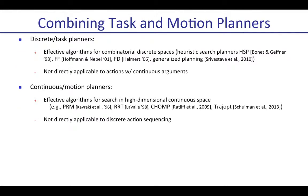Task planners and motion planners have distinct complementary strengths. Task planners are very good at finding solutions in combinatorial search spaces, mostly by using innovative techniques for finding heuristics automatically given a domain specification. But they're not so great at finding paths in continuous high-dimensional search spaces, which is what motion planners are very good at — using a variety of random sampling methods and convex optimization methods. On the other hand, motion planners are not directly applicable to discrete action sequencing.